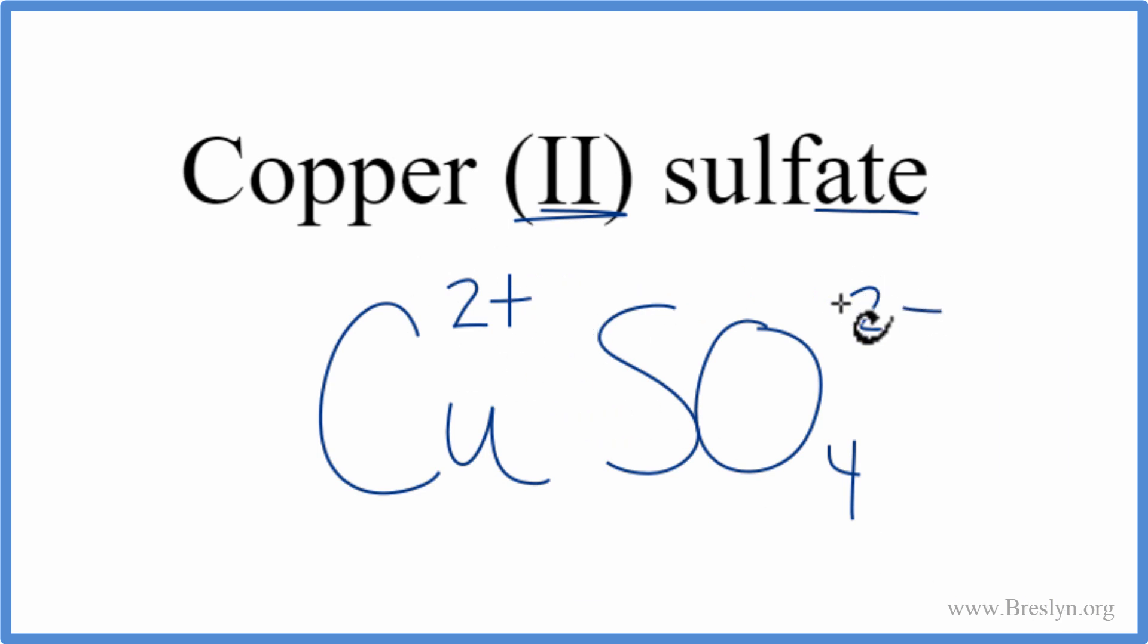Since this is 2+, and this is 2-, that adds up to 0. The net charge is 0, and that makes this the formula for copper 2 sulfate.